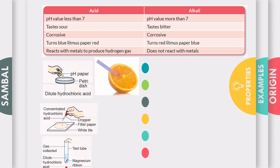The third one is to test the reaction on metal. There you have a magnesium ribbon. You put it inside a dilute hydrochloric acid. After a while, you will produce a gas. The gas collected is then tested with a lighted splinter.